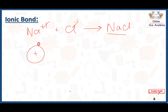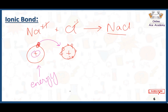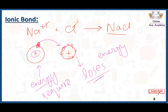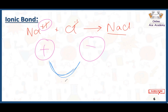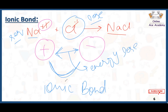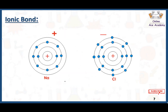Sodium has only one electron in the outermost shell and chlorine has seven. Sodium loses one electron and gives it to chlorine. We provide kinetic energy — ionization energy — to sodium to lose this electron. When chlorine gains the electron, it releases energy — electron affinity. This positive and negative charge attract each other, forming an ionic bond. When there is force of attraction, energy is released.